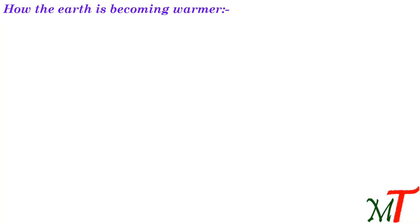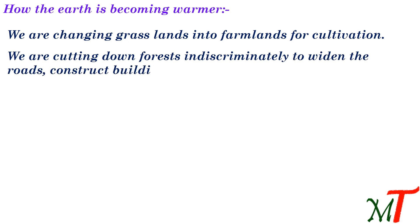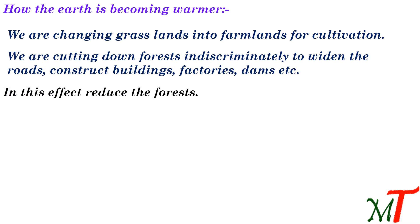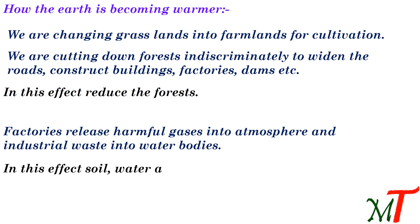How is the earth becoming warmer? We are changing grasslands into farmlands for cultivation. We are cutting down forests indiscriminately to widen roads, construct buildings, factories, dams, etc., reducing forest cover. Factories also release harmful gases into the atmosphere and industrial waste into water bodies, causing soil, water, and air pollution. In these two ways, the environment changes.